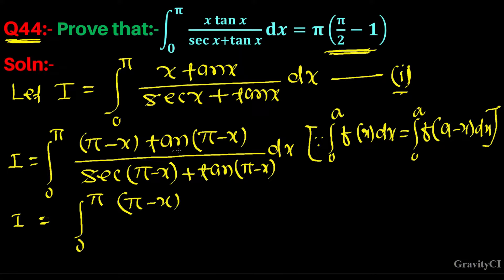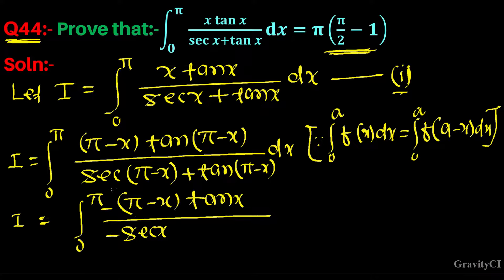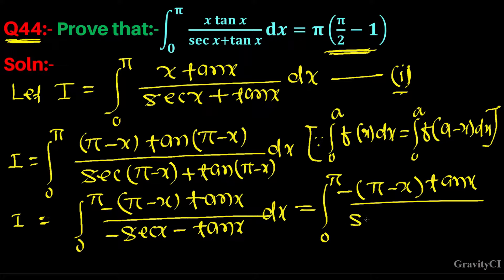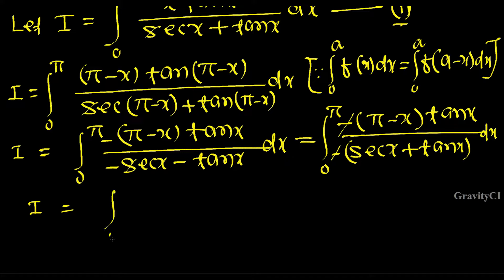Now, tan(π - x) is in the second quadrant so it equals -tan x, and similarly for sec(π - x) equals -sec x. Taking minus common, I equals integral from 0 to π of (π - x)·tan x / (sec x + tan x) dx.